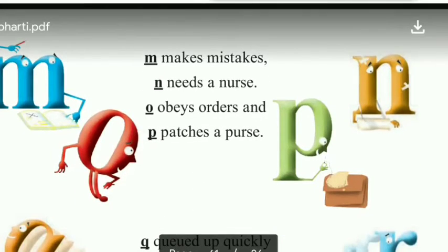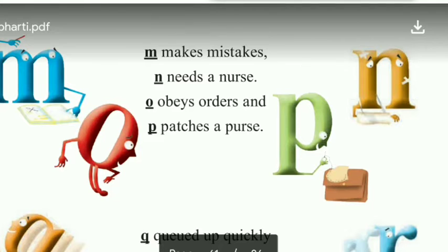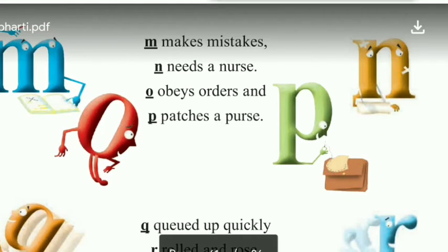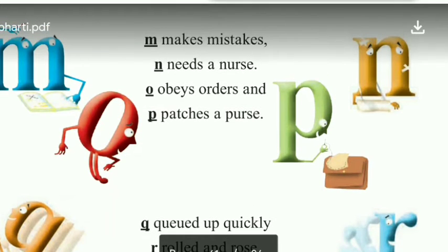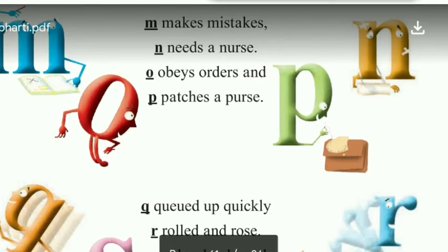M makes mistakes. Letter M kya kar raha hai, bahut sari galtiyan kar raha hai. Mistake ka matlab hota hai galtiyan. And N needs a nurse. Letter N ko kis ki zarurat hai, nurse ki zarurat hai. O obeys orders. Letter O kya kar raha hai, kis ka kanun follow kar raha hai, orders kar raha hai. P patches a purse. Letter P kya kar raha hai, purse liya hai.